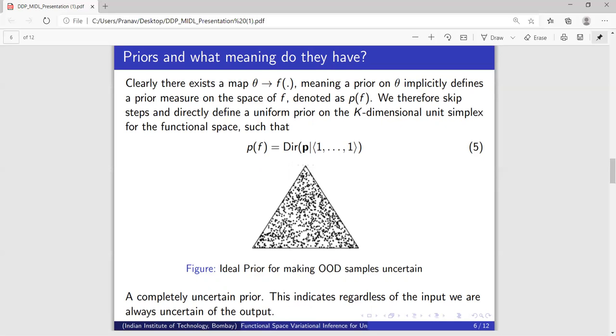And now it is hard to understand the link between the two and therefore the cleverer way to go about this would be to directly define a prior on the functional space. And in our case, the most ideal prior would be a completely uncertain prior or a completely uniform prior on this k-1 dimensional simplex, which is nothing but Dirichlet with all parameters 1.